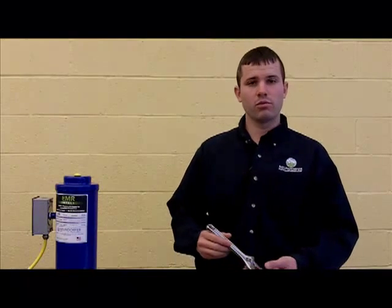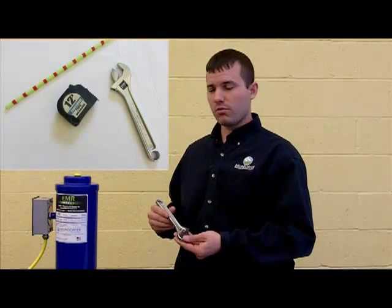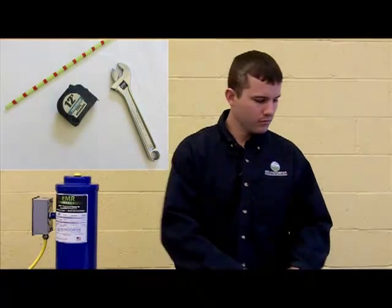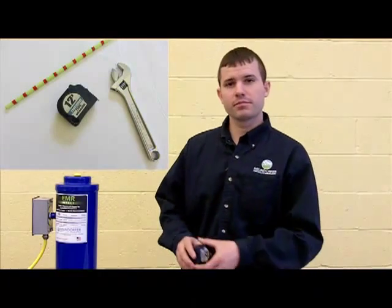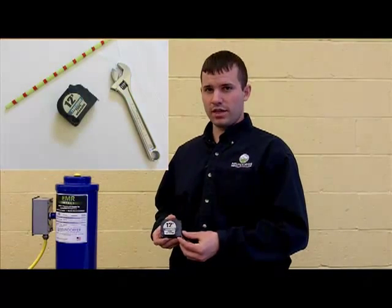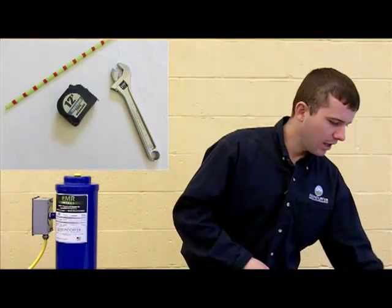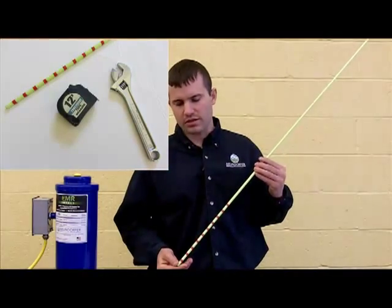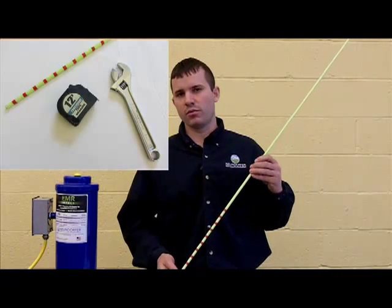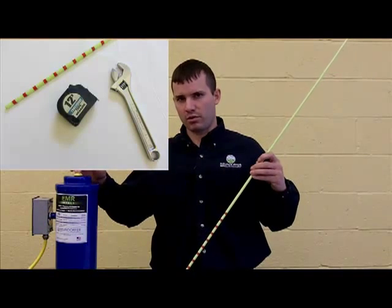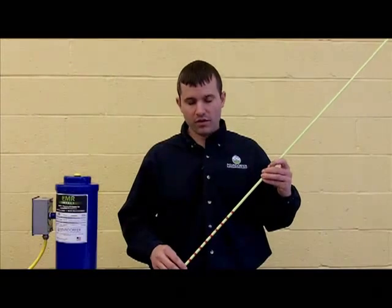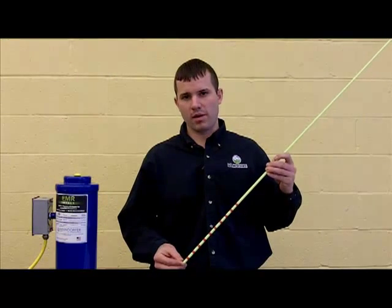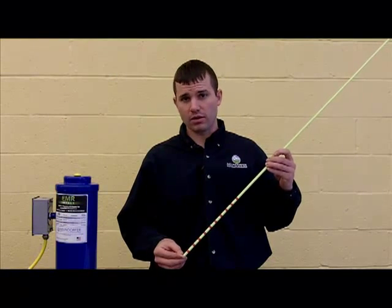First, we're going to need a few tools: a wrench to remove the top plug, a tape measure to measure the lift height, and a non-metallic rod. In this case, it's a quarter-inch diameter to fit through the 9-16 diameter hole. This rod is pre-marked for the 10-pound wrapper, and I'll discuss how to do this momentarily.